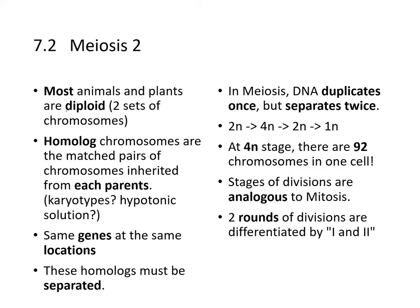Most animals and plants are diploid, having two sets of chromosomes. Homologous chromosomes are the matched pairs inherited from each parent, which we've seen lined up in karyotype pictures. Karyotypes are produced using colchicine and hypotonic solution to rupture the cell. The same genes are located at the same positions on homologous chromosomes.